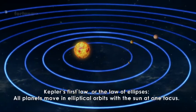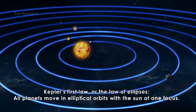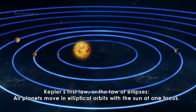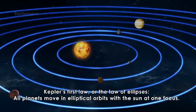Kepler's first law or the law of ellipses states that all planets move in elliptical orbits with the sun at one focus.